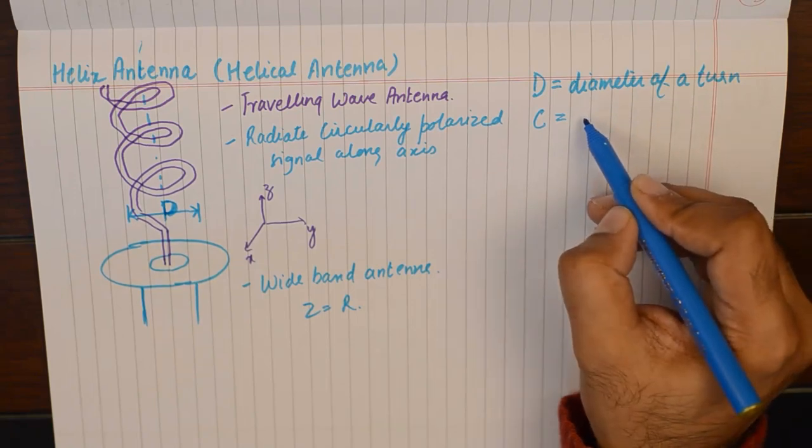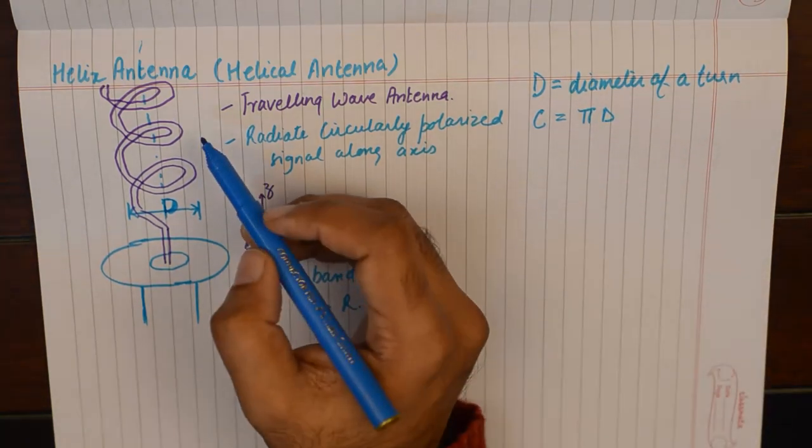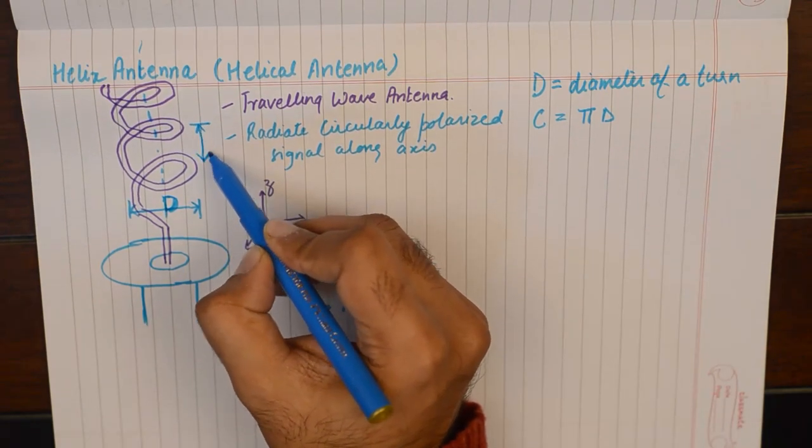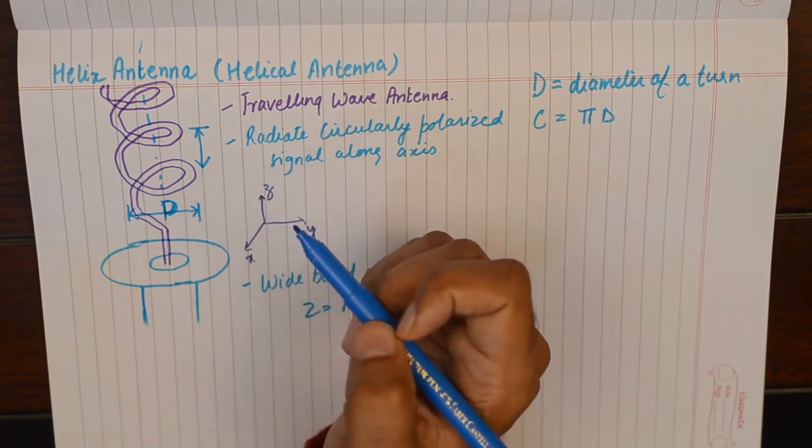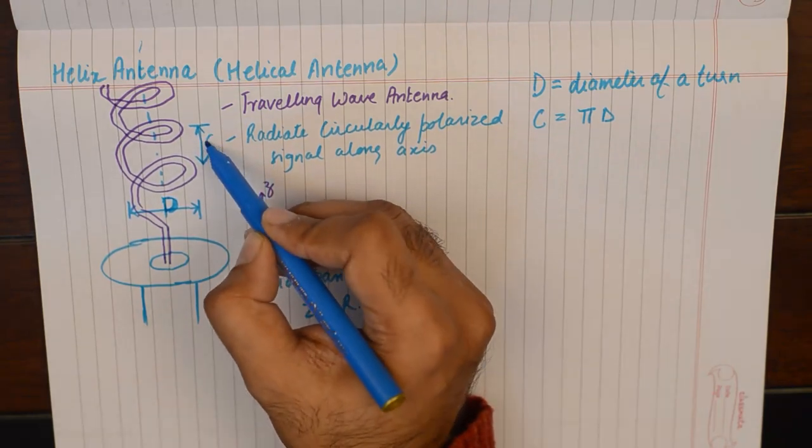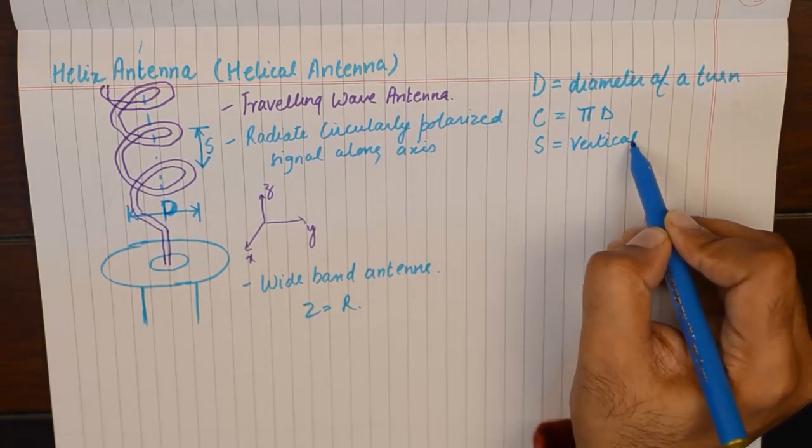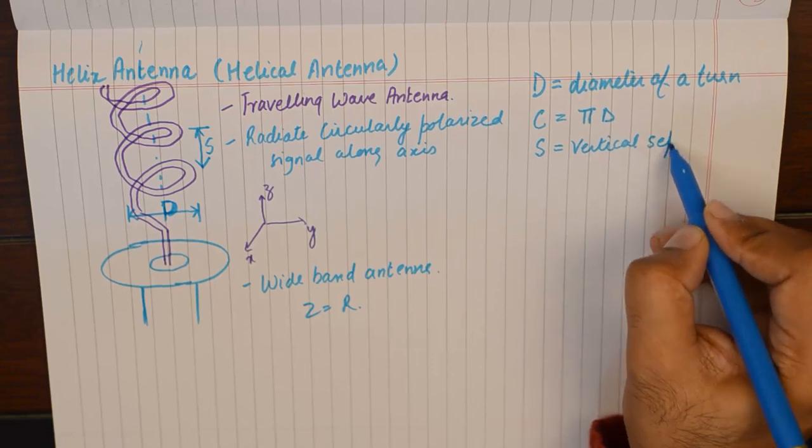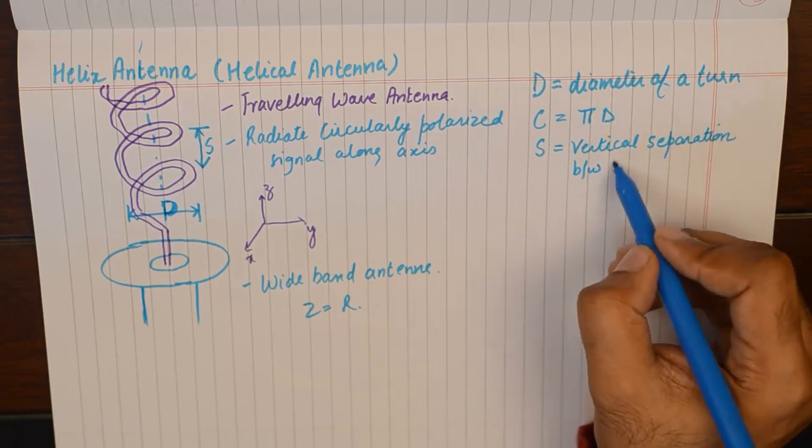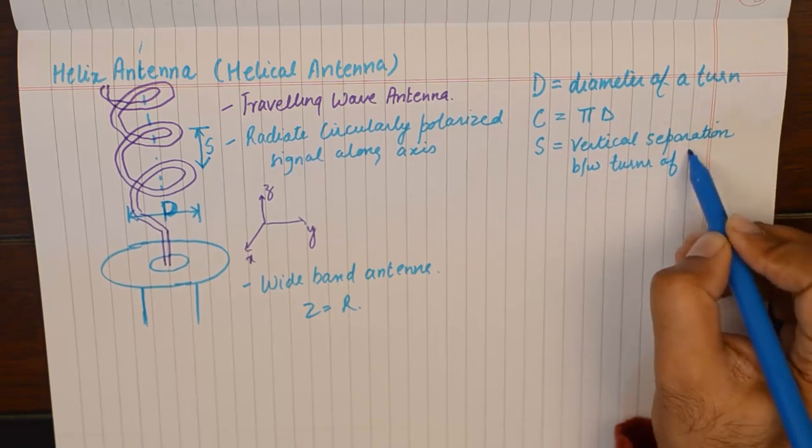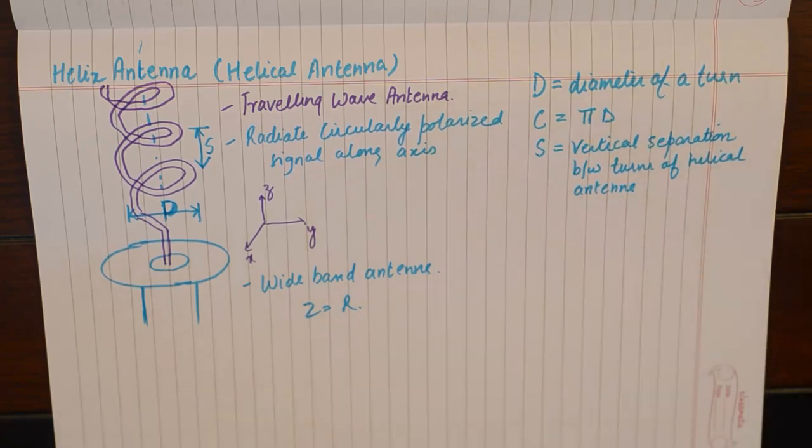Then we have an important parameter which is the distance between the two turns of helical antenna, or you can call it the vertical separation between two turns, and it is denoted by S. So S will be the vertical separation between turns of helical antenna.